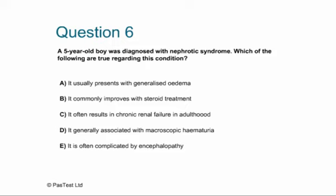Answers: A is true — minimal change typically presents with generalised oedema. B is true — it commonly improves with steroid treatment. C is false — it doesn't often result in chronic renal failure; most cases burn themselves out in adolescence. D is false — macroscopic haematuria would suggest it's not minimal change but a more atypical nephrotic syndrome. E is false — there's no CNS involvement, and most children with minimal change are underfilled and hypotensive.